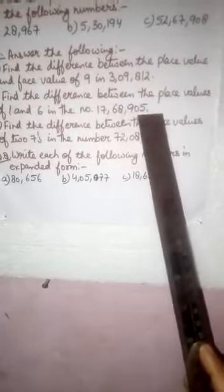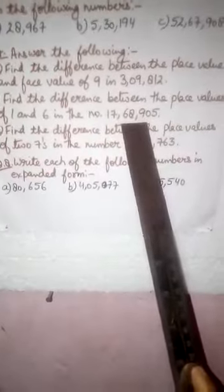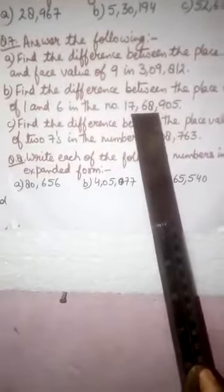Question number 7. Find the difference between the place values of 1 and 6 in the number 17,68,905. You will find the place value of 1 and 6 in this question and then you will subtract them. Then you will get the answer.